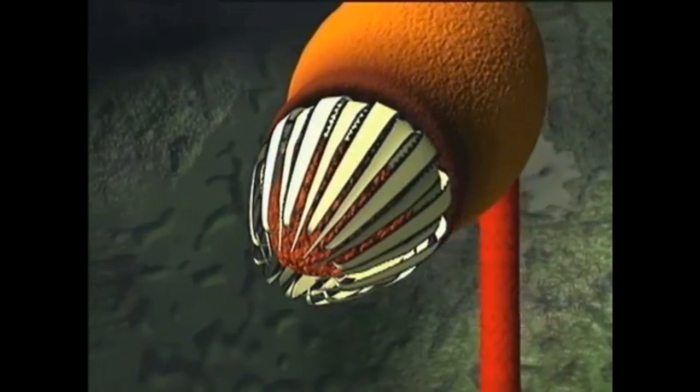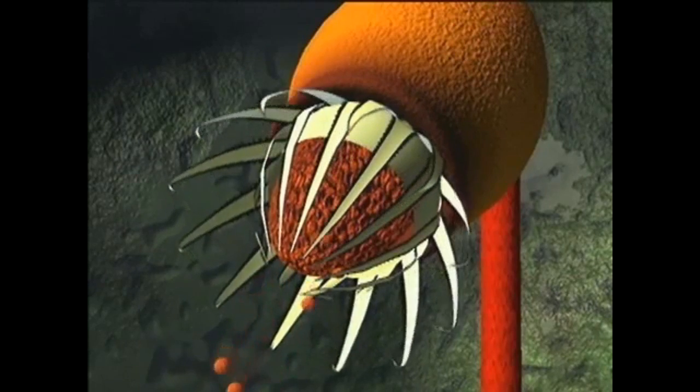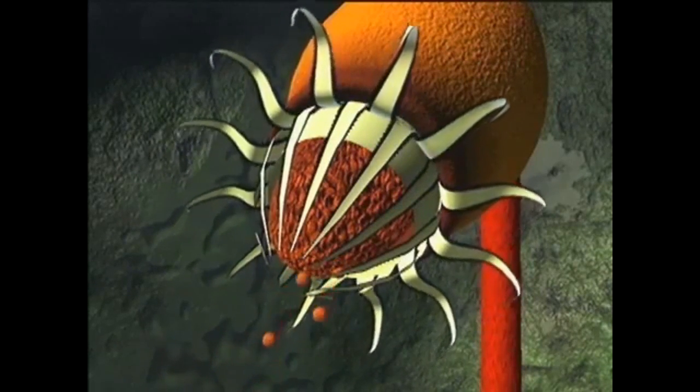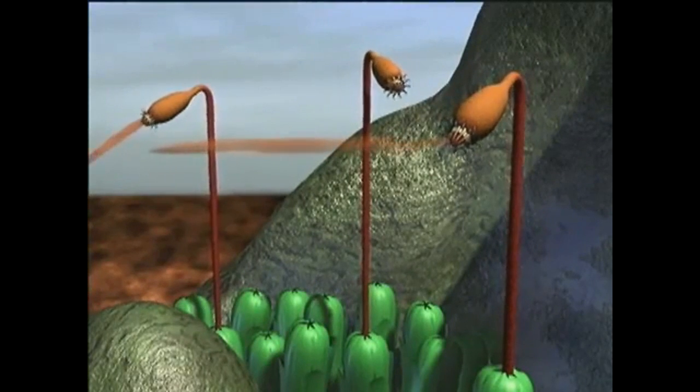As they dry out, they bend backwards, allowing the spores to escape. A light breeze is all it takes to carry the spores away from the parent plant.